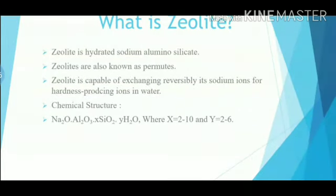Now, what is zeolite? Zeolite is hydrated sodium alumino silicate. They are also known as permutites. That's why this process is also called the permutite process. Zeolites are capable of exchanging reversibly its sodium ions for hardness-producing ions in water. Its chemical structure is Na₂O·Al₂O₃·xSiO₂·yH₂O, where X varies from 2 to 10 and Y varies from 2 to 6.